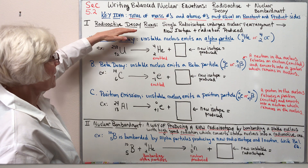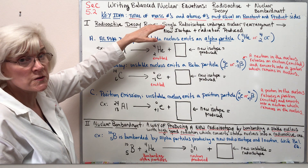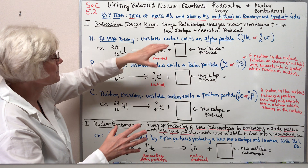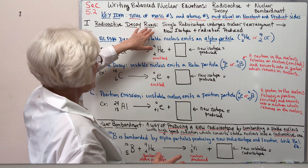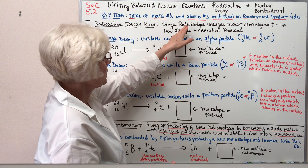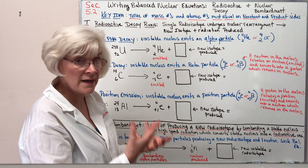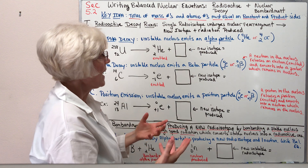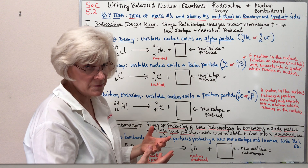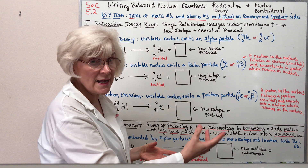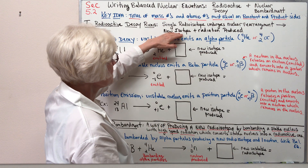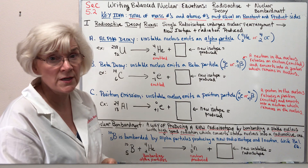Let's take a look at radioactive decay reactions first. Here's the hallmark, here's the pattern: if it is a radioactive decay, you have a single reactant which is a radioisotope — an unstable nucleus — and it spontaneously undergoes a nuclear rearrangement. It emits radiation in this process as a product and converts into a new isotope.